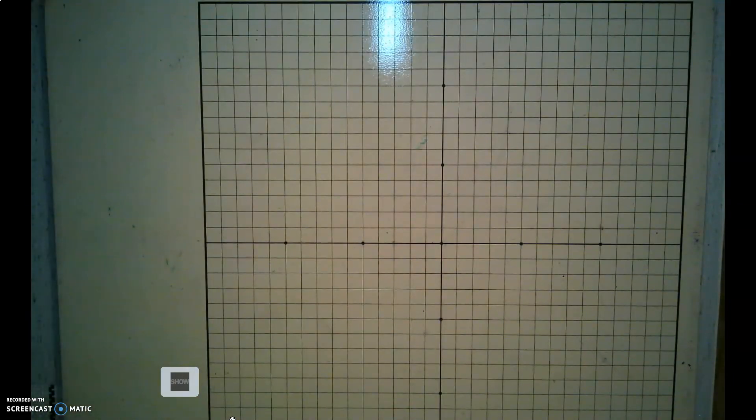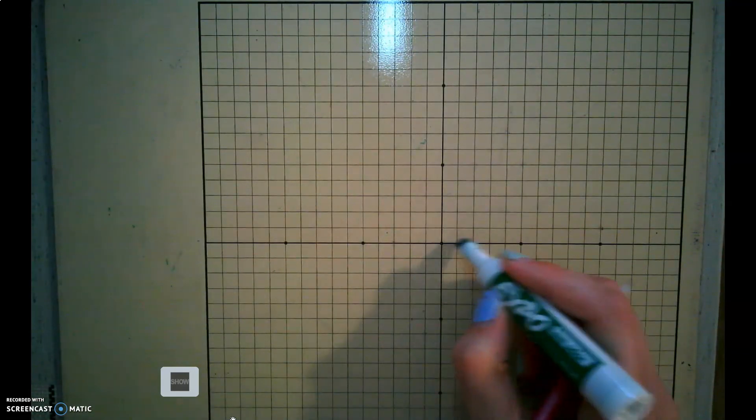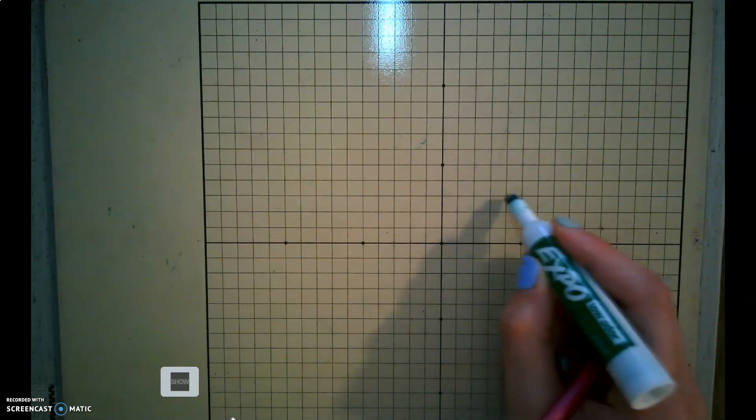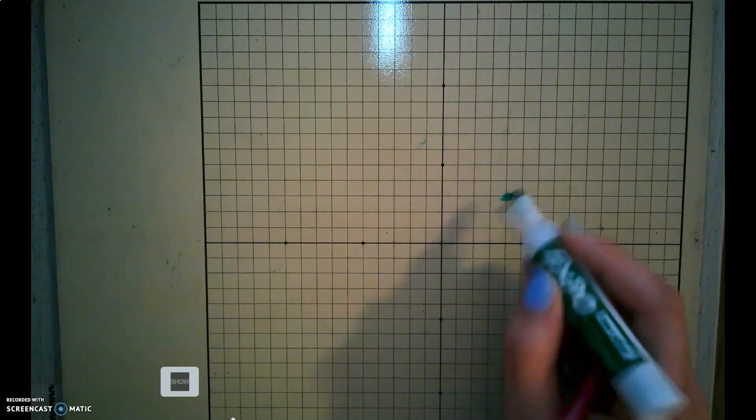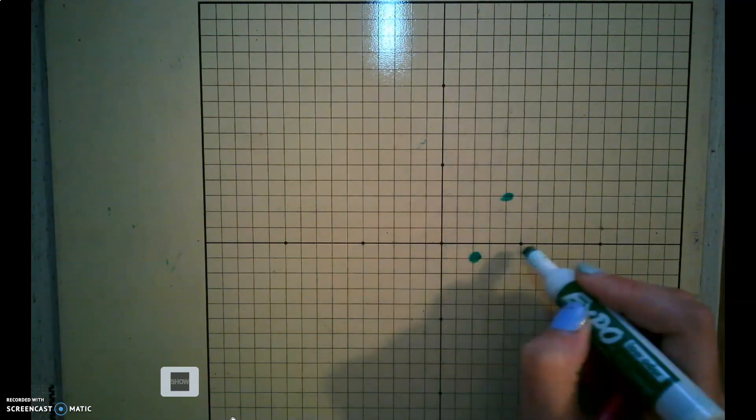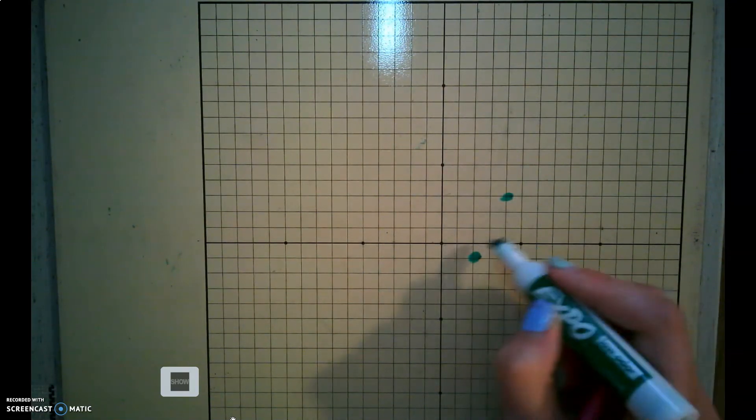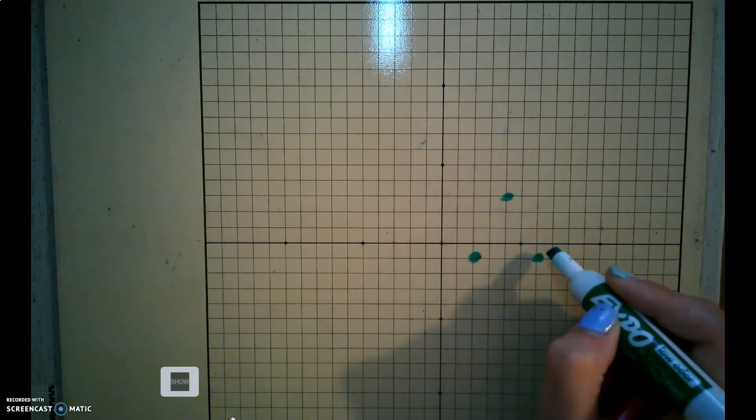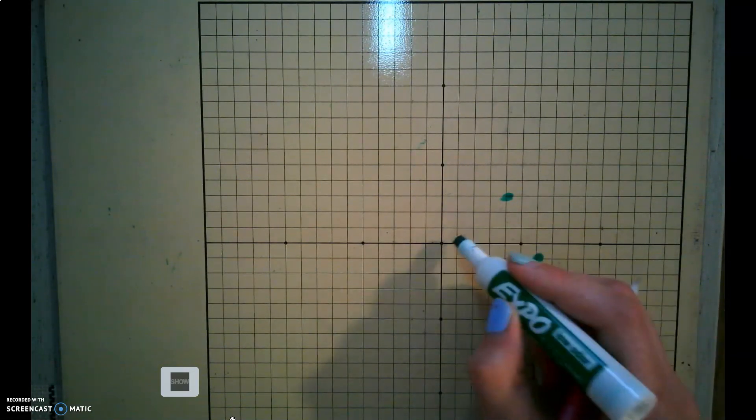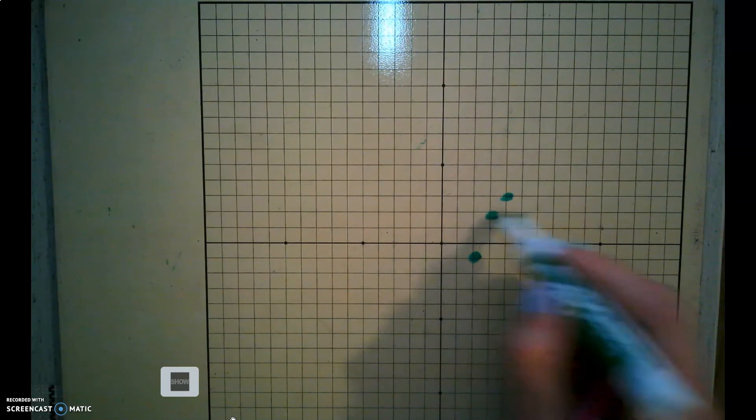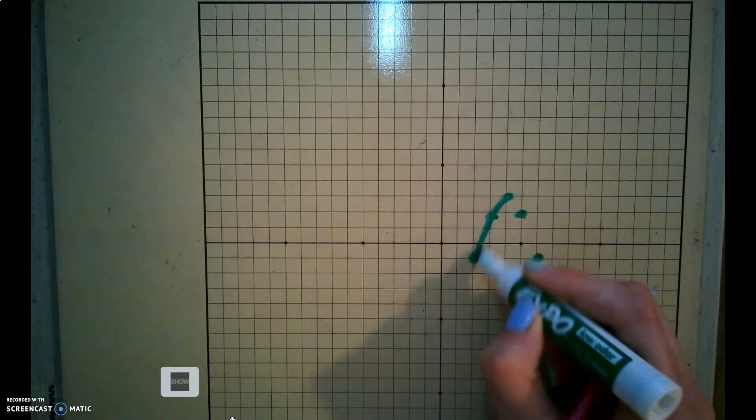Now we can take those points and plot them. So we have 4, 3, then 2, negative 1 and 6, negative 1. Then we have 3, 2 and 5, 2. So it looks like this.